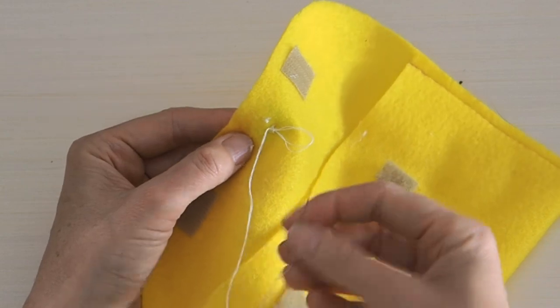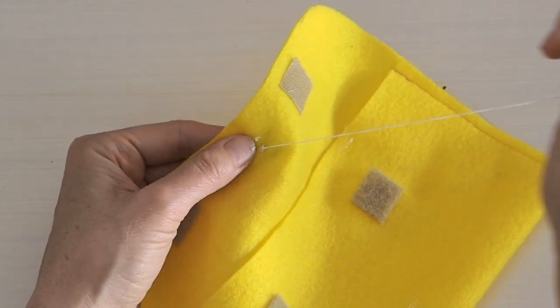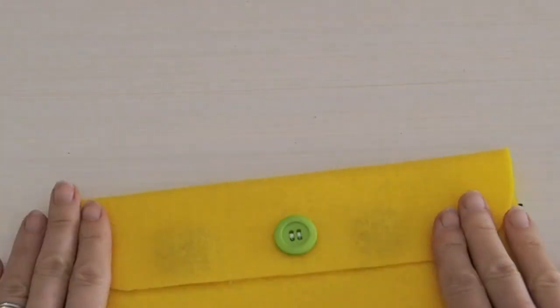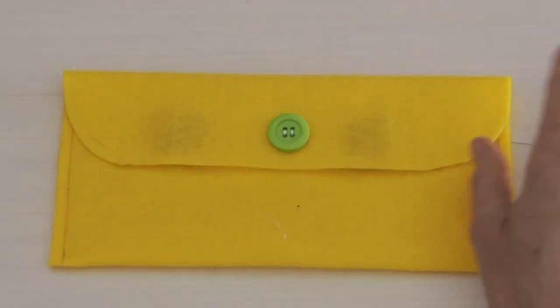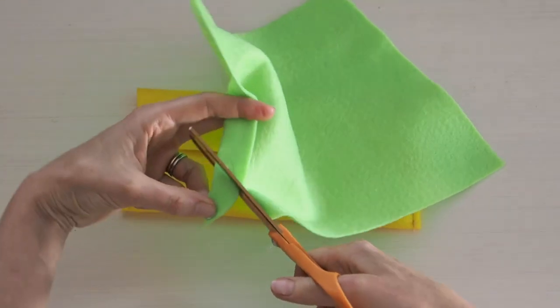So I'm all done putting the button on. Then we're going to decide what do we want to put on the front just to embellish it, make it a little brighter. It's certainly finished the way it is but if you want to brighten it up I'm going to cut out a little green heart today.